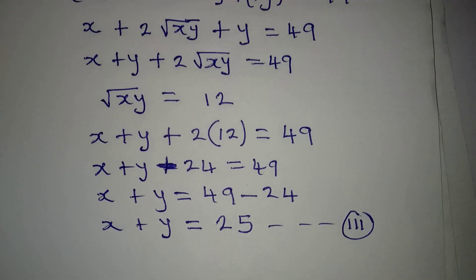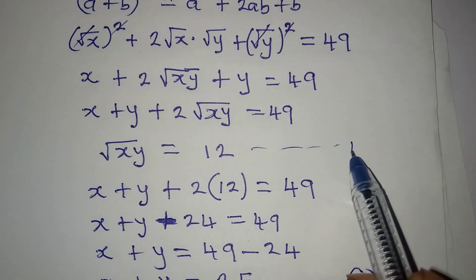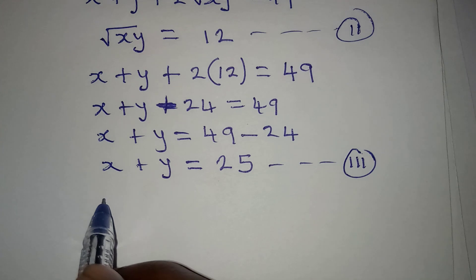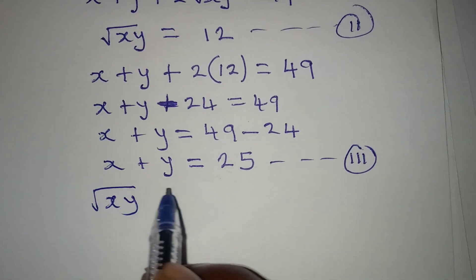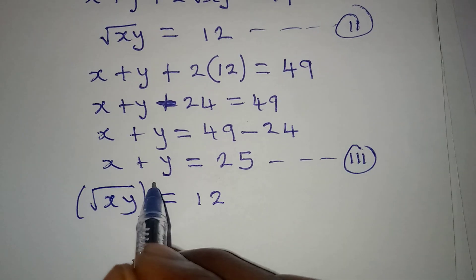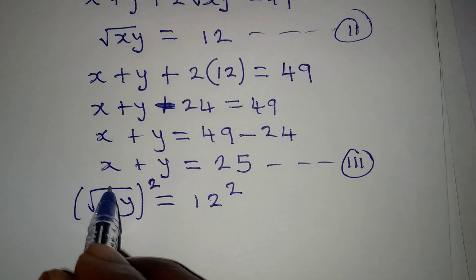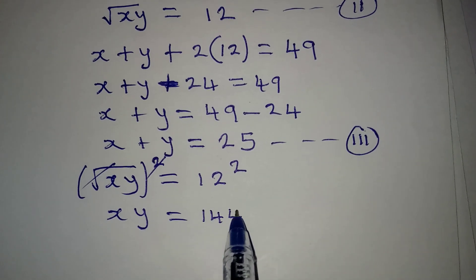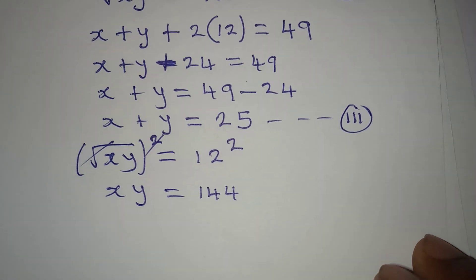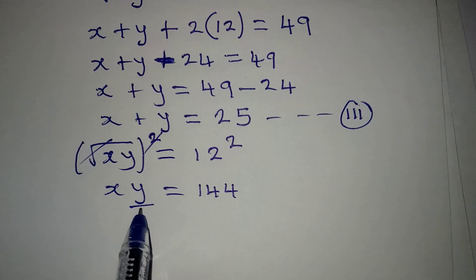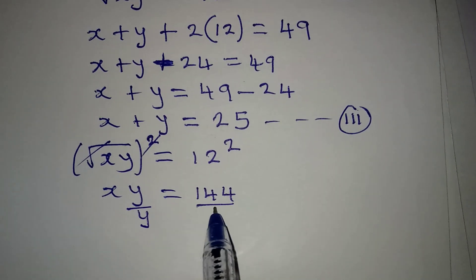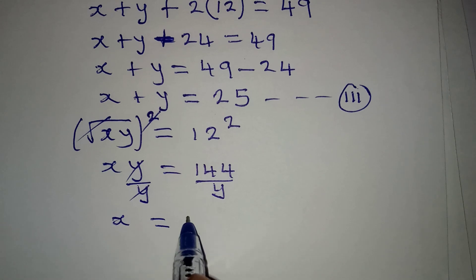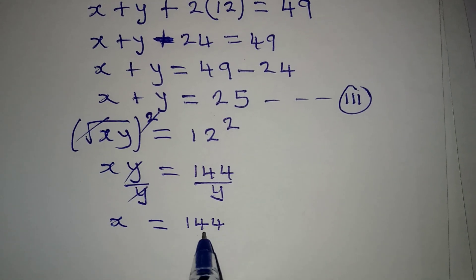Now let's go back to equation 2: square root of xy equals 12. If we square both sides, the square root cancels, meaning xy equals 144. The next step is to divide both sides by y, so y cancels and x equals 144 over y. We can call this equation 4.